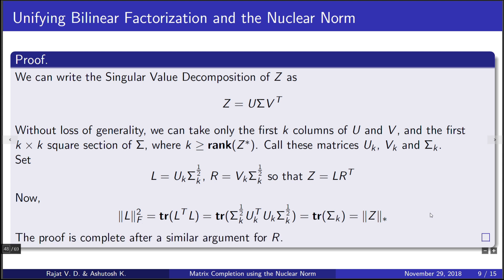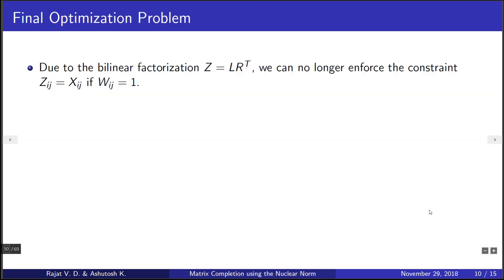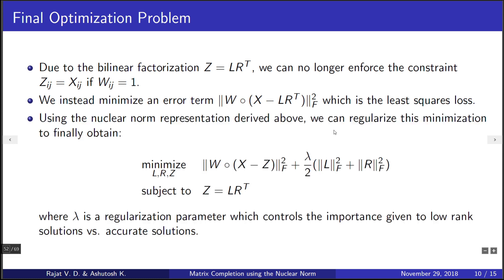On the other hand, with bilinear factorization, we cannot force the constraint we had earlier. We can instead replace this constraint by minimizing an error term, which is the least squares loss between the samples we had and the values predicted by our factorization. We can now frame the final optimization problem by adding a regularization parameter lambda to this error term. Note that lambda is the parameter that controls the trade-off between similarity of X and Z and low rank of Z.